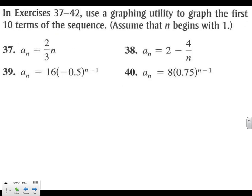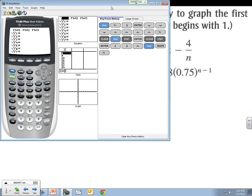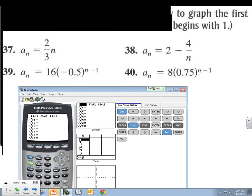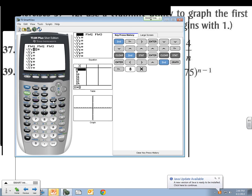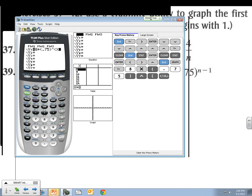Alright, let's go ahead and jump to 40. We'll use a graphing utility to graph the first 10 terms here. So we can use our table to get that done for us. Let me jump over to the graphing calculator. Move this down so we can see our formula. So y equals 8 times 0.75 to the n minus 1. And I'm going to make sure to put it in parentheses. We'll use x here for a variable, but n. Same thing, it's a variable.